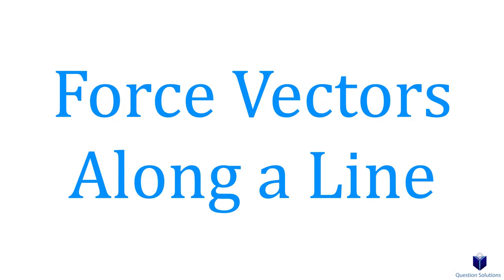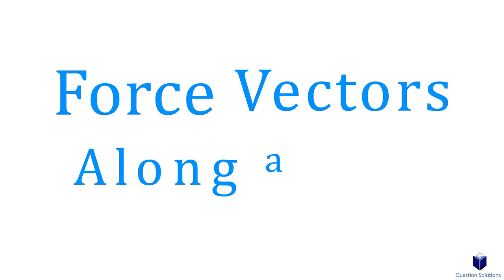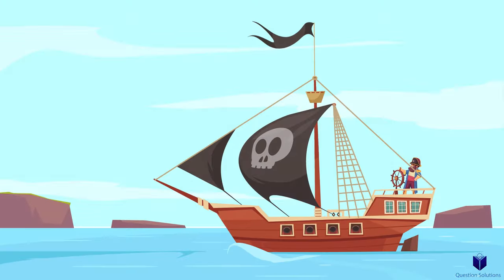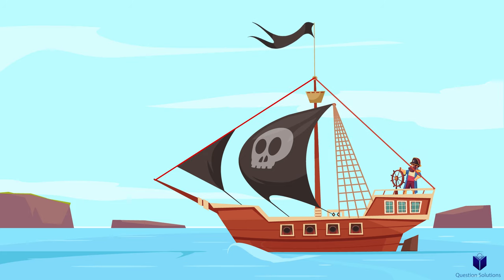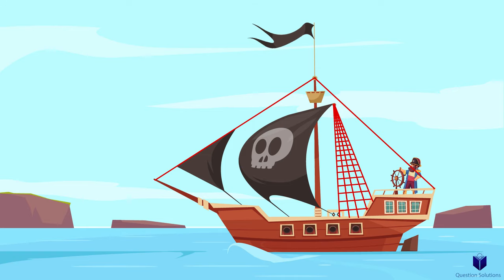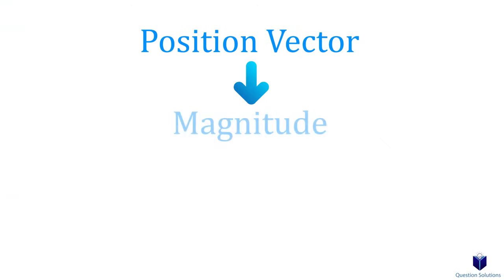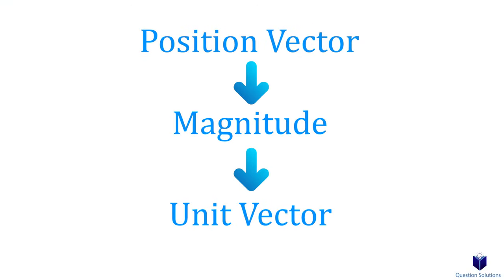Sometimes we're given forces that go from one point to another — for example, a force along a rope. We need a way to express that force in Cartesian form. To do that, we just need to follow a set of steps and you'll always get your answer.